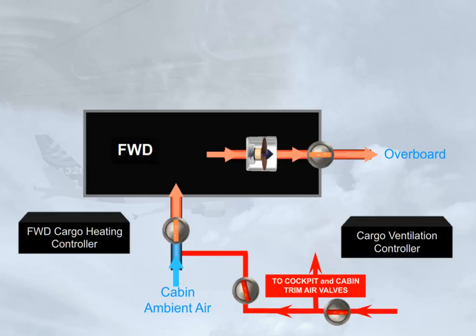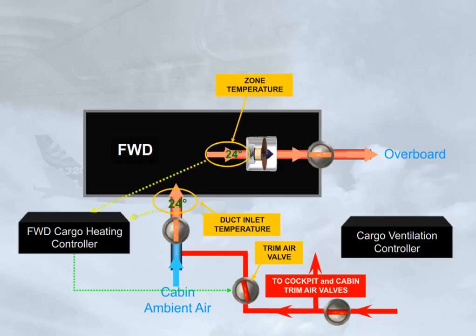The forward cargo heating controller controls the related trim air valve and monitors the related duct inlet and zone temperatures. Compartment heating is not available when the forward cargo door is open, or when the hot air valve is closed.